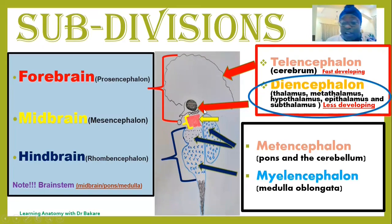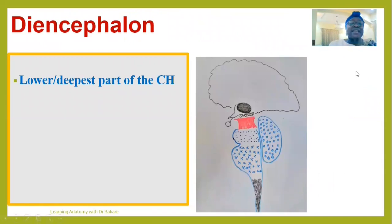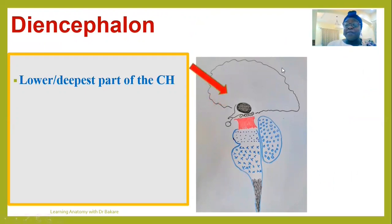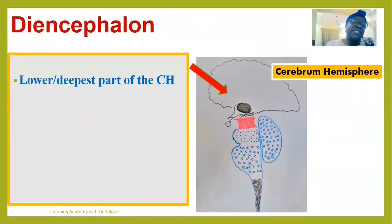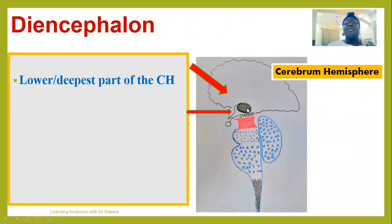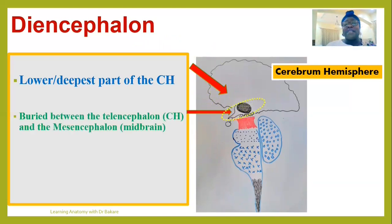Let me drive in to see the anatomical configuration of the diencephalon. The diencephalon is the lowest part of the prosencephalon, located deep to the cerebral hemisphere. If you look at the image, the telencephalon is up here — the cerebral hemisphere — and inferior to it, we have the diencephalon. The diencephalon is embedded within the cerebral hemisphere and is sandwiched or buried between the telencephalon and also the mesencephalon.